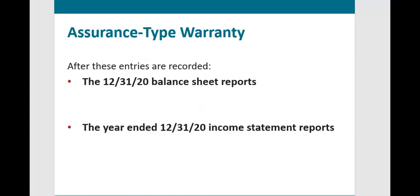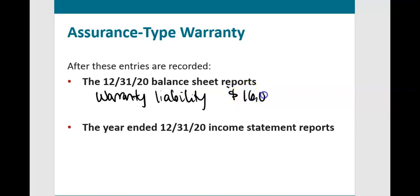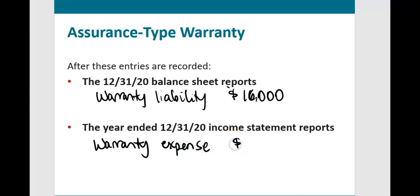At the end of the accounting period, the balance sheet reports a warranty liability of $16,000, representing repairs not yet taken place. The year-end income statement reports warranty expense of $20,000 — the sum of the $4,000 already recorded plus the $16,000 adjusting entry — exactly what we want: total expense reported in the year the related sales are recorded.